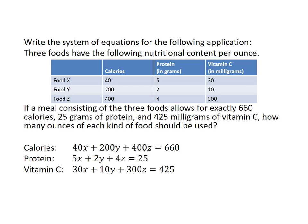These equations are respectively: 40x plus 200y plus 400z equals 660 — those are the calorie values. Then 5x plus 2y plus 4z equals 25 — those are the protein values for the different foods. And for vitamin C: 30x plus 10y plus 300z equals 425 — those are the vitamin C values for each individual food.